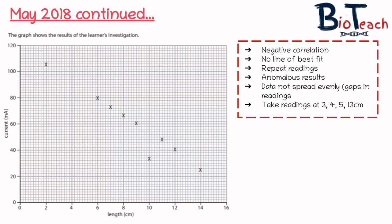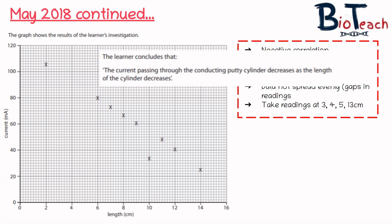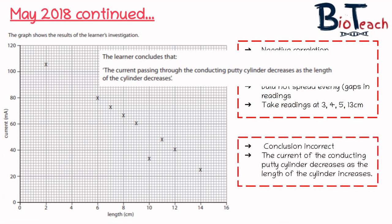From the graph I can see a negative correlation. There is no line of best fit, no evidence of repeat readings, an anomalous result at 10 centimeters with no repeat, and the data is not spread evenly — readings are missing at 3, 4, 5, and 13 centimeters. The conclusion stated that 'the current passing through the conducting putty cylinder decreases as the length of the cylinder decreases' — but the graph shows current decreases as length increases, so the conclusion is incorrect. The correct conclusion is that current decreases as the length of the cylinder increases.